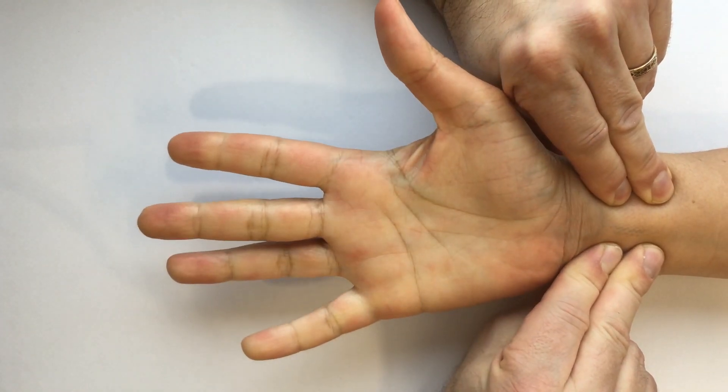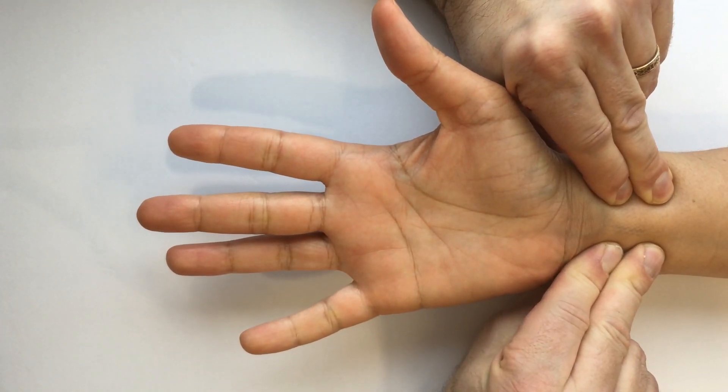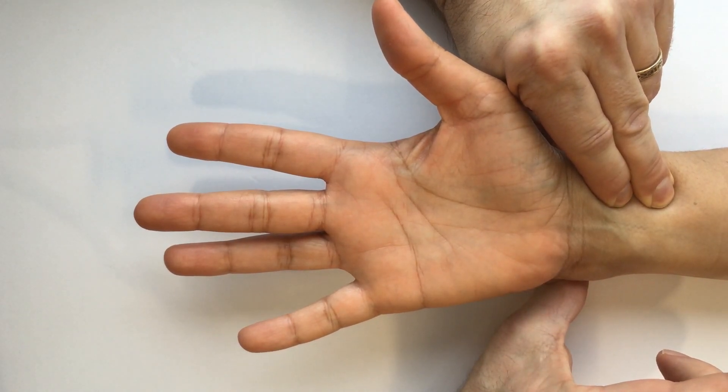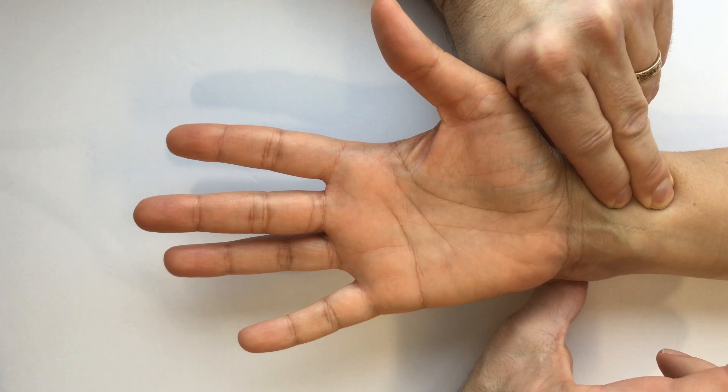Once they've done that three or four times, their palm and fingers will be very pale. Then you release one side and count the number of seconds for the color to return to normal.